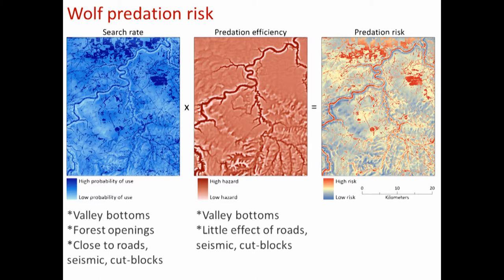Once we control for that using resource selection modeling and look at predation efficiency — given where they're hunting, what affects the probability of making a kill in space and time — using proportional hazards modeling, other factors fall out. The only consistent predictor of where wolves actually make kills given where they're hunting is tight drainages. In valley bottoms and tight drainages there's a higher probability of a kill. Combining search rate and efficiency rate gives the complete prediction of predation risk.